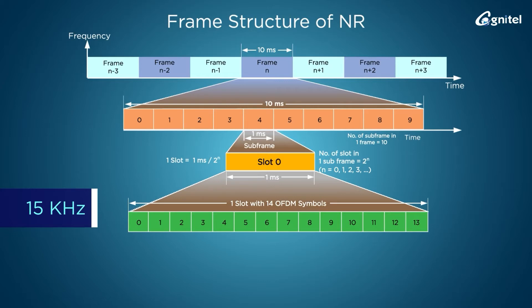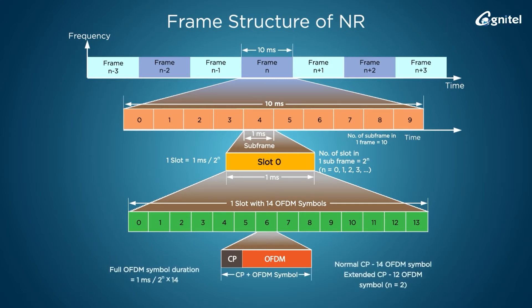Each slot is further divided into 14 OFDM symbols numbered from 0 to 13. This remains constant for all the subcarrier spacings. Each symbol has two sets of data information: CP or cyclic prefix, which is used to account for delay, and the OFDM symbol, which is the actual data to be transmitted.